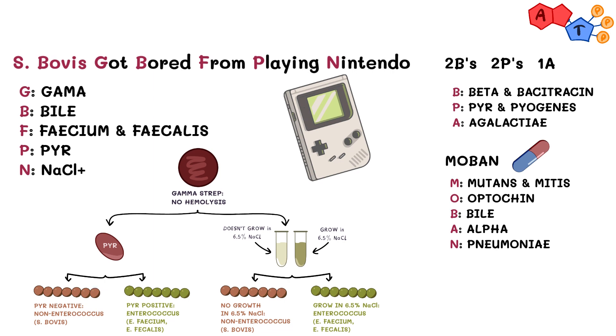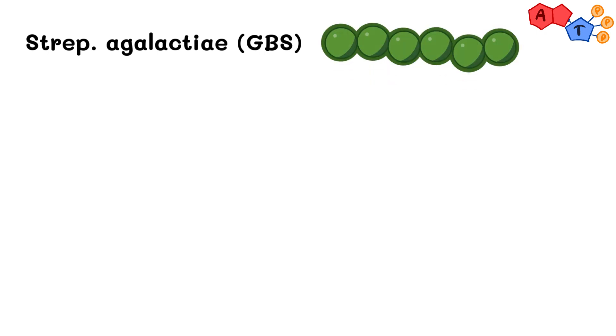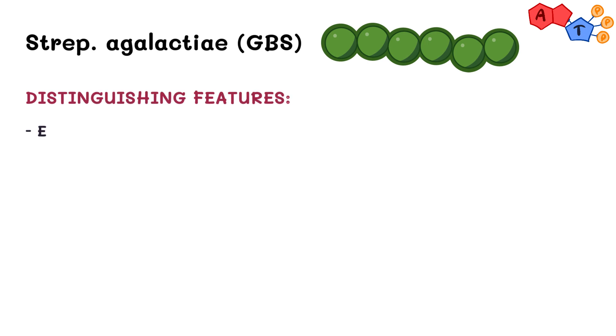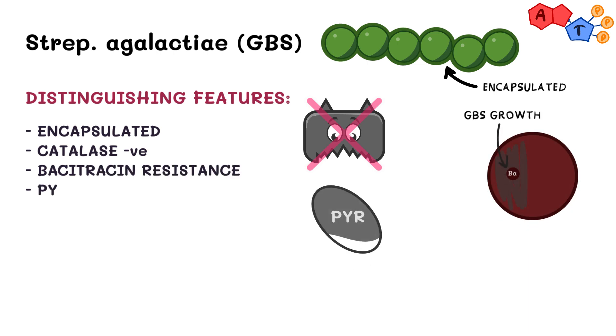Here's again the full picture. Now we will discuss Streptococcus agalactiae, also referred to as group B strep. Group B streptococcus is gram-positive cocci. For its distinguishing features, it's encapsulated, it's also catalase negative, bacitracin resistant, and PYR negative.